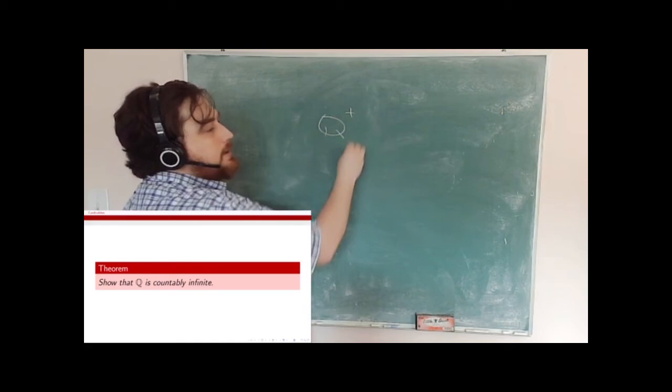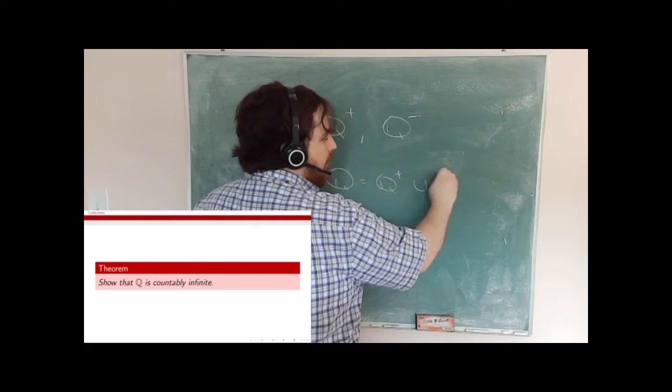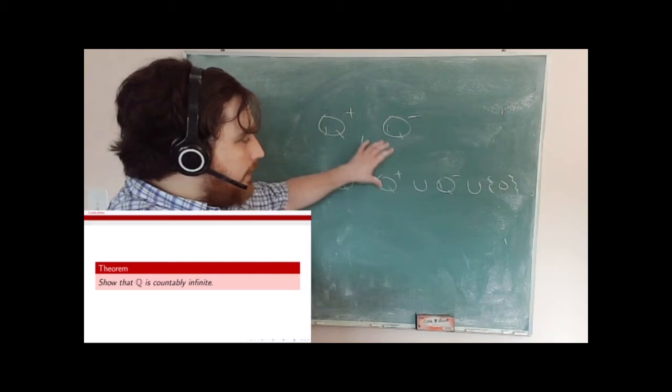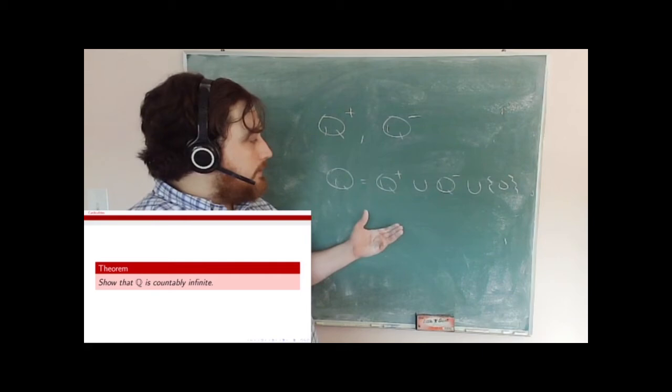Now I'm going to first show that the positive rationals are countably infinite, which means the negative rationals are also countably infinite. Then all rationals = (positive rationals) ∪ (negative rationals) ∪ {0} — countably infinite union countably infinite union a finite set — is still countably infinite. So if I can show the positive rationals are countably infinite, the rational numbers overall are countably infinite.